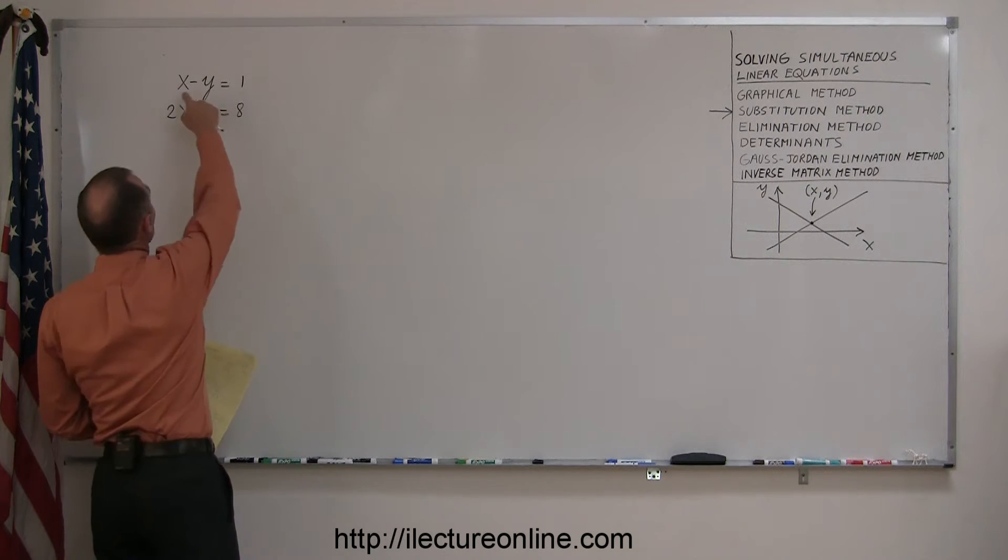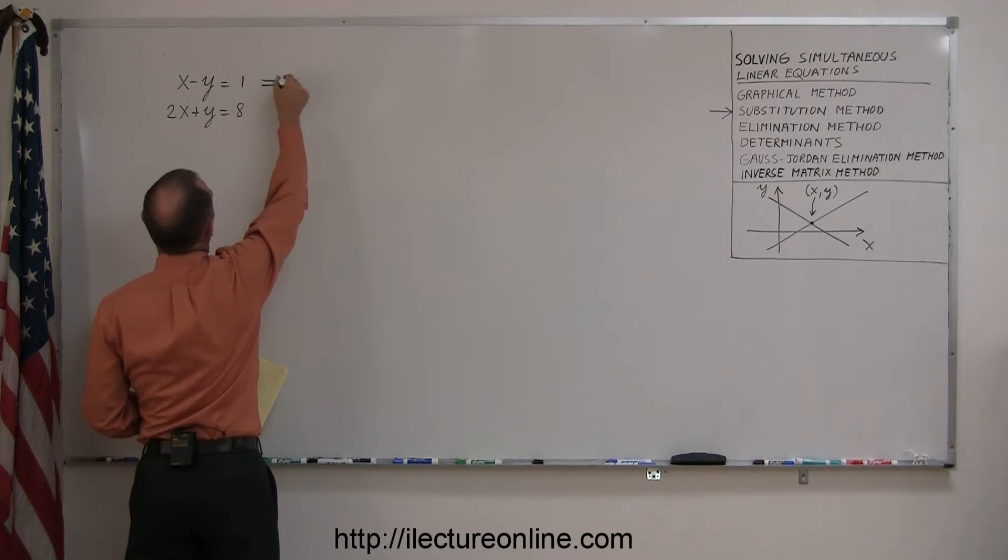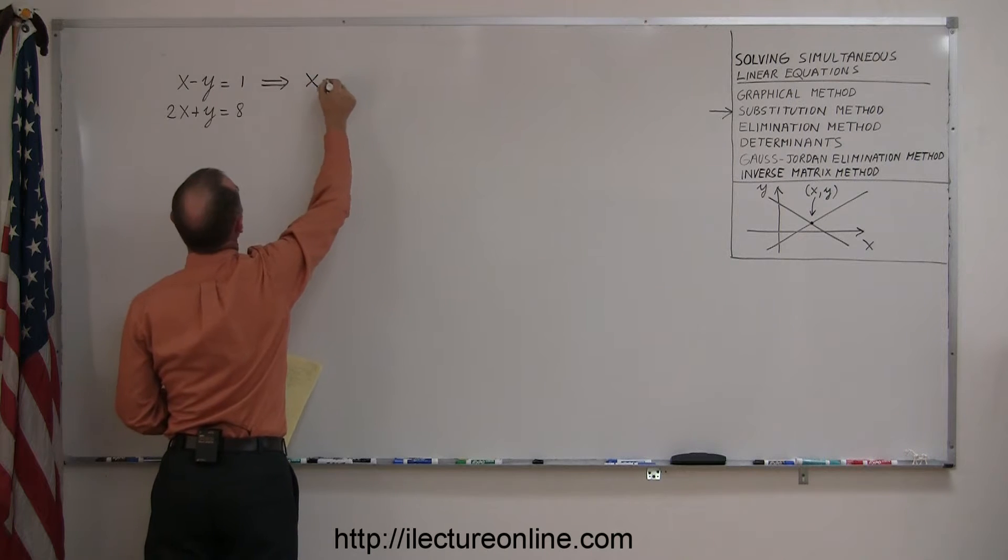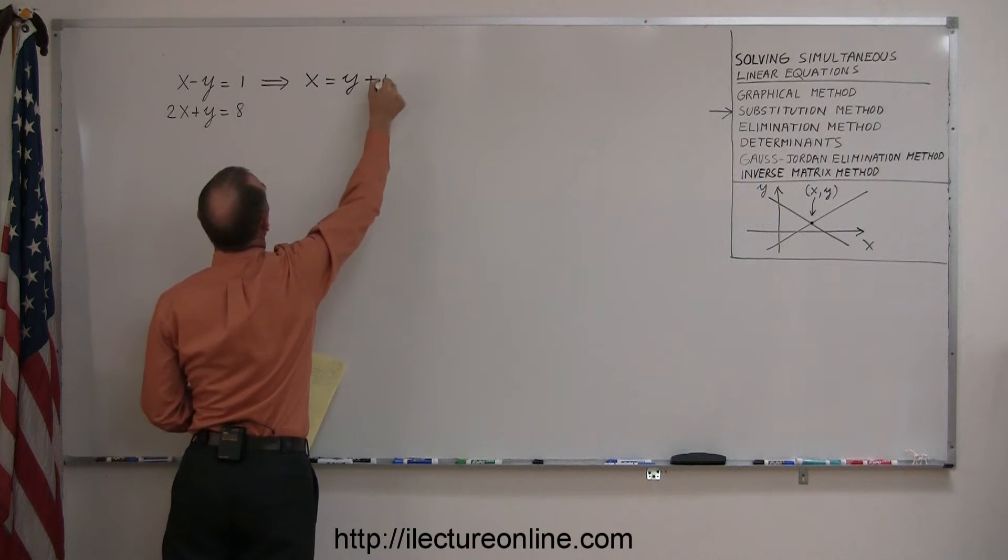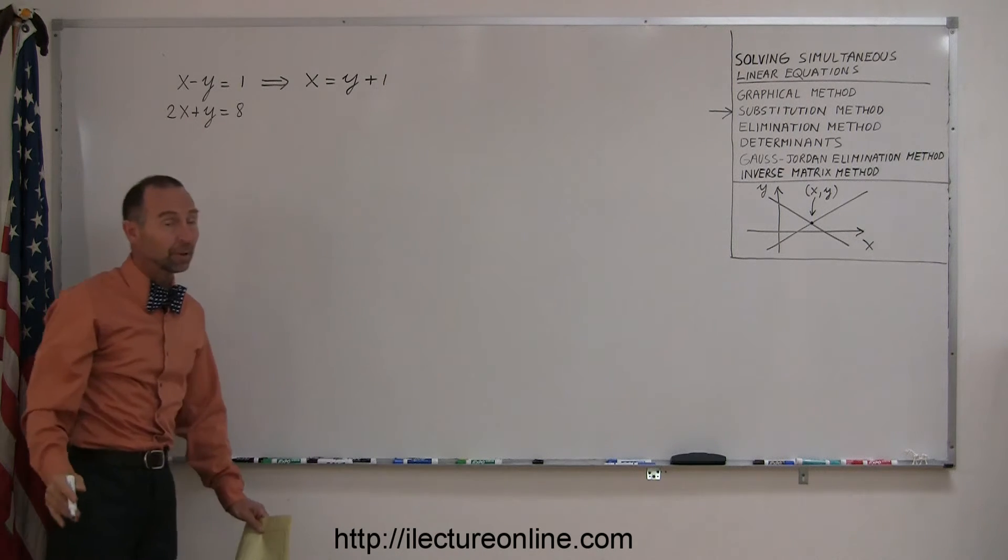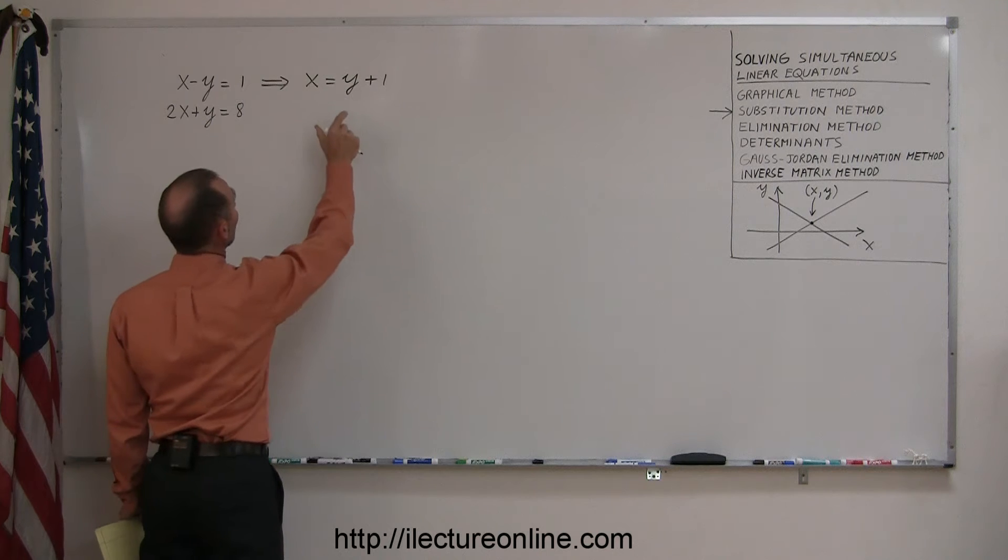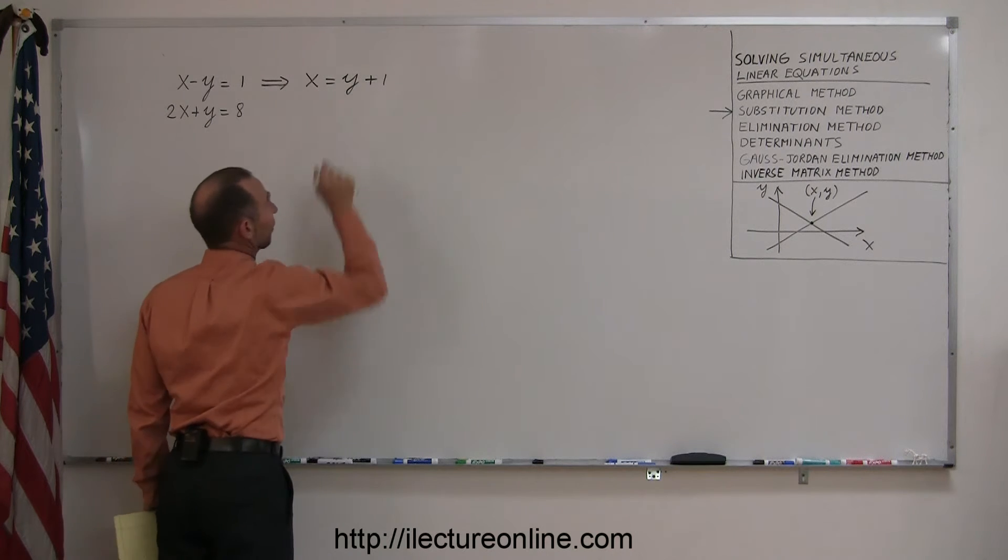In this case, I'll just go ahead and take my first equation and solve that equation for x. That means I'm going to move the y to the other side, and so this becomes x equals y plus 1. All right, same equation, different form, but notice now I have expressed x in terms of the other variable y.